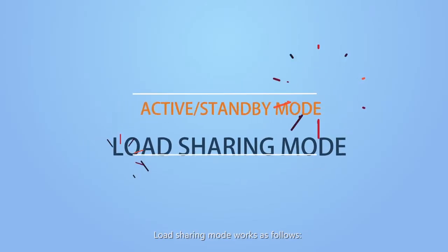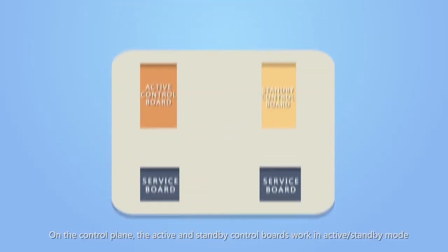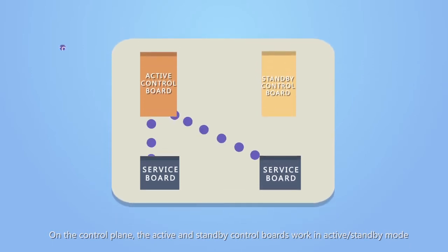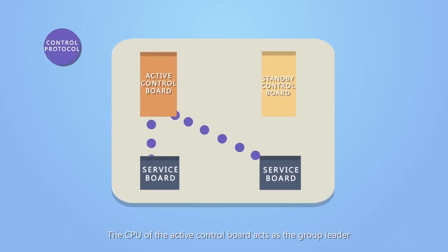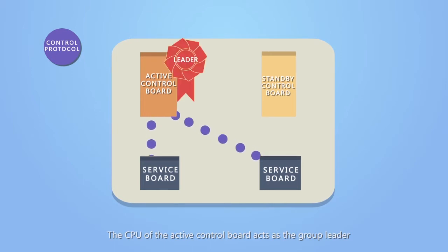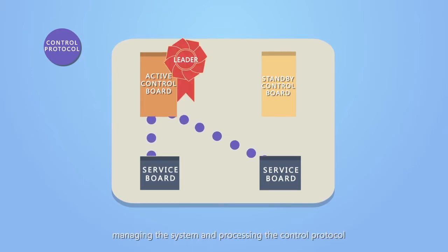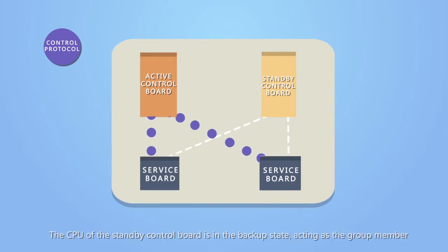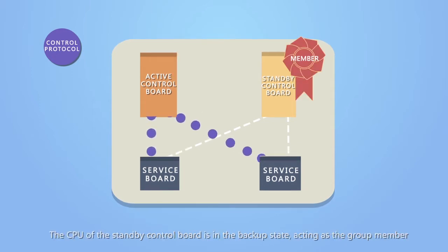Load sharing mode works as follows. On the control plane, the active and standby control boards work in active standby mode. The CPU of the active control board acts as the group leader, managing the system and processing the control protocol. The CPU of the standby control board is in the backup state, acting as the group member.